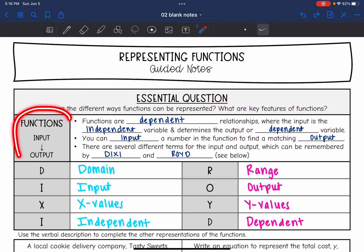So a function is a relationship where each input has an output. They are dependent, where the input or the independent variable will determine the output or the dependent variable. We can input a number into the function to find the matching output. And besides these words, there are other terms for the input and output, which can be remembered by Dixie and Roy D.